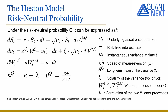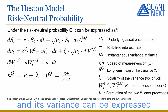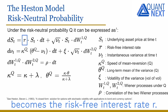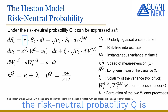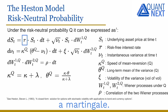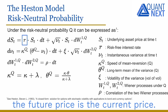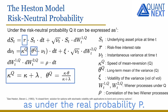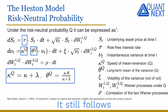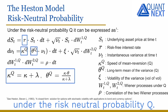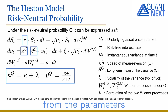Under the risk-neutral probability Q, the dynamic of the asset price and its variance can be expressed as follows. The drift of the asset price process becomes the risk-free interest rate R. It is similar to the Black-Scholes framework — the risk-neutral probability Q is arbitrage-free, and under this probability the discounted asset price is a martingale. It is assumed that the variance process still follows a Cox-Ingersoll-Ross process, but the speed of reversion and the long-term variance are not the same under Q. They can be expressed from the parameters under the real probability P with the introduction of a new parameter lambda.